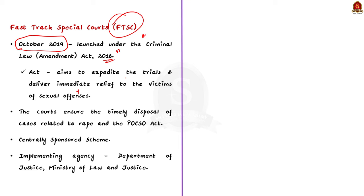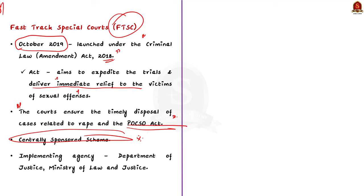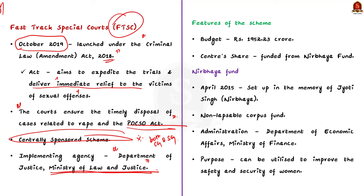The act also mandates immediate relief to victims of sexual offences. Based on these provisions, the Central Government created the Fast Track Special Court or FTSC scheme. Under the scheme, the government aims to set up numerous courts, including exclusive POCSO courts across the nation. These courts ensure the timely disposal of cases related to Rape and the POCSO Act. Note that FTSC is a centrally sponsored scheme — the fund is shared jointly by both states and the Centre. The scheme is implemented by the Department of Justice under the Union Ministry of Law and Justice. The FTSC scheme has a total budgetary outlay of Rs. 1,952 crores — Rs. 1,200 crores given by the Central Government and the remaining Rs. 744 crores shared among the states. The central share is funded from the Nirbhaya Fund.